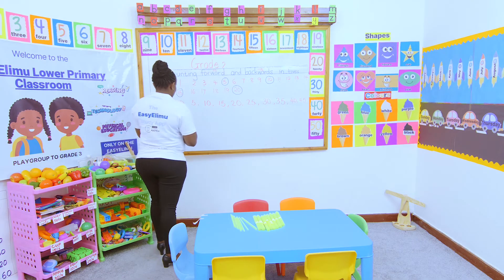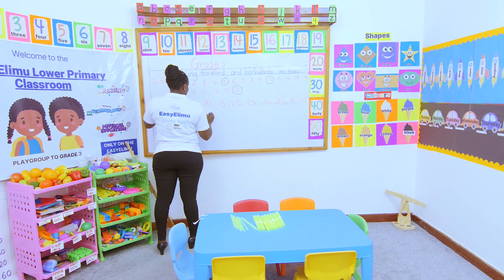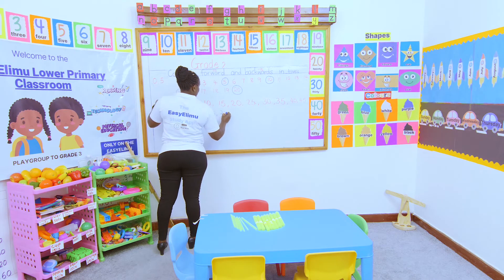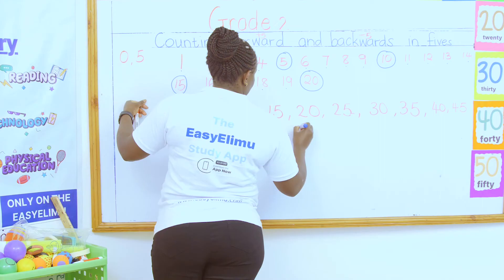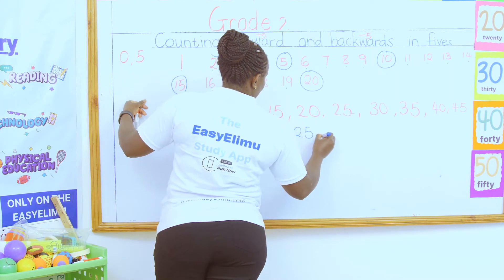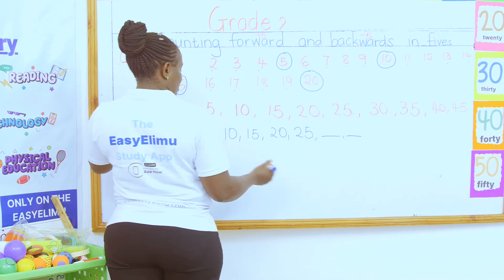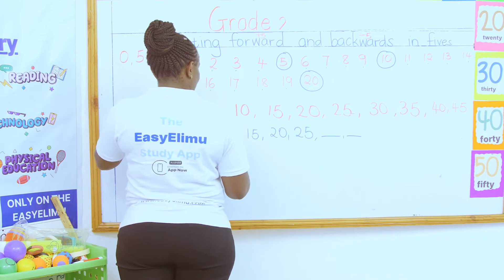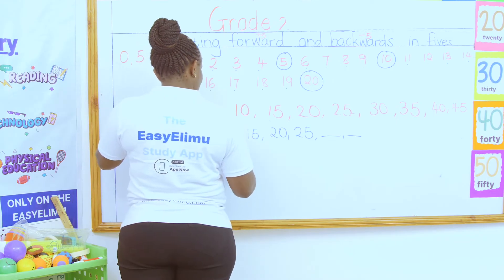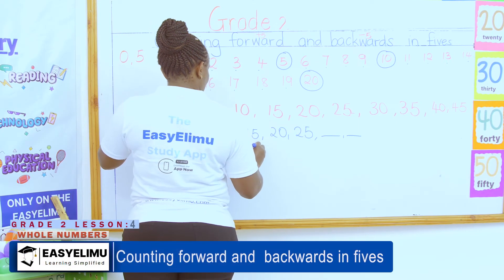Now if I'm told to fill in the missing numbers, I'm counting forward. I fill in the missing numbers: 10, 15, 20, 25 — which one is the missing number? Now these ones ask me to fill in going backward.